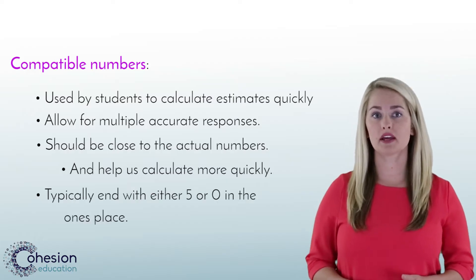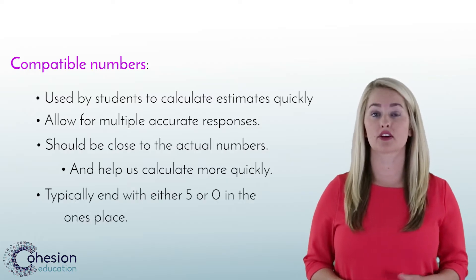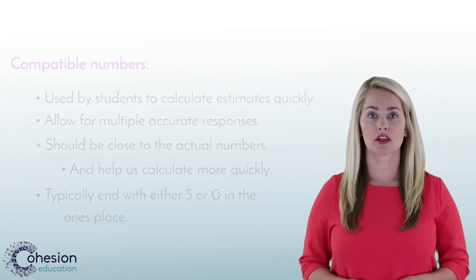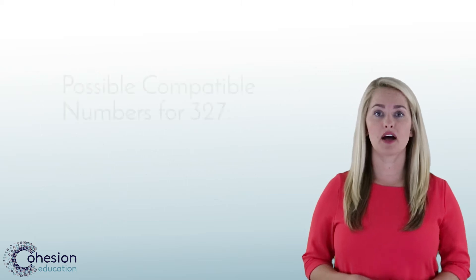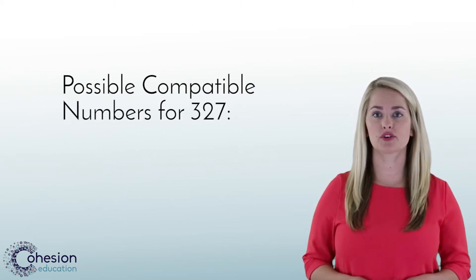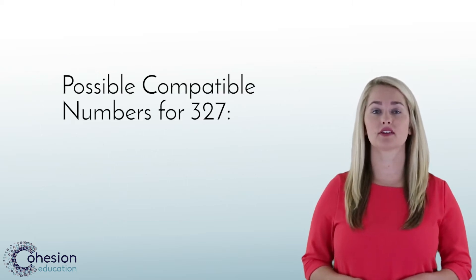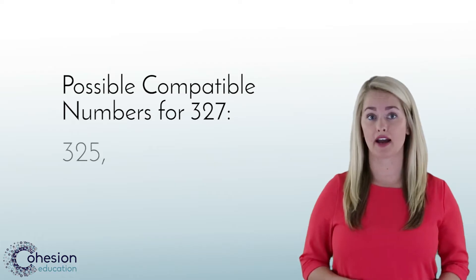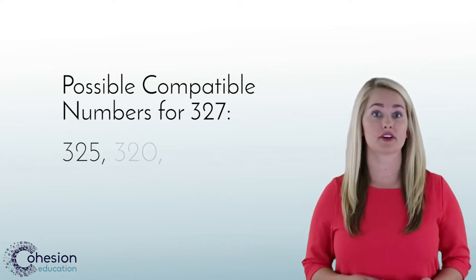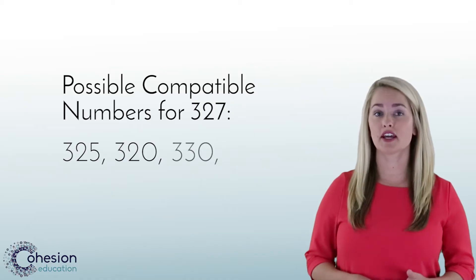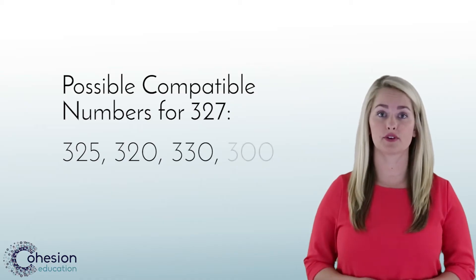When using compatible numbers, it's important to note that there may be multiple accurate responses. The number should be close to the actual number and be a number that helps the student add more quickly. Typically, this will be a number that ends in either 5 or 0. For example, possible compatible numbers for 327 could be 325, 320, 330, or 300.